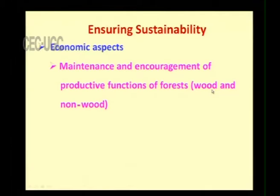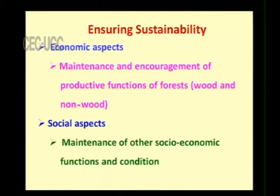For example, deforestation increases temperature, which in turn decreases moisture and water flow. Even if the ecosystem remains somewhat healthy, the protective function can still be disturbed — and that should not happen. The economic aspect involves maintenance and encouragement of productive functions of forests, such as wood and non-wood products. The social aspect involves maintaining other socio-economic functions and conditions, since the forest ecosystem is deeply interwoven with the society and people living there.